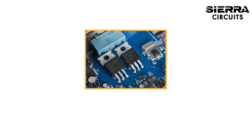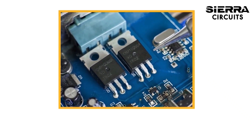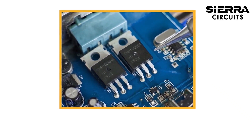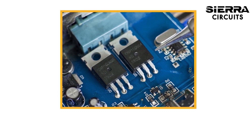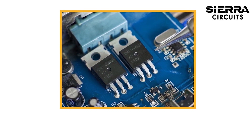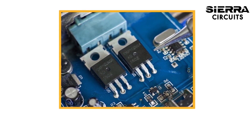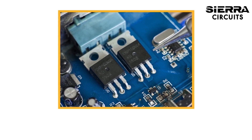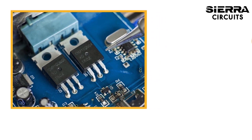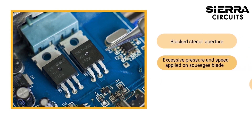Component shorting happens when the amount of solder paste deposited at the printer station is much less than the stencil opening. After reflow, insufficient solder forms a fillet at the component leads. This issue is caused by a blocked stencil aperture, excessive pressure and speed applied to the squeegee blade, and low viscosity solder paste. You can avoid this by checking the squeegee blade pressure and speed and regularly cleaning the stencil.